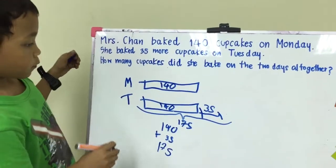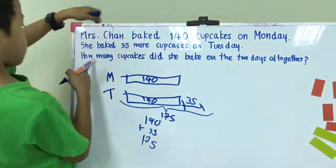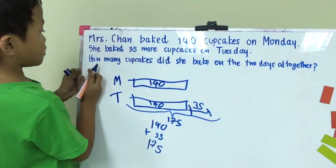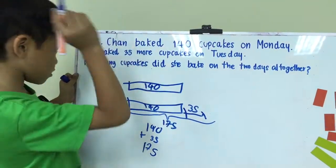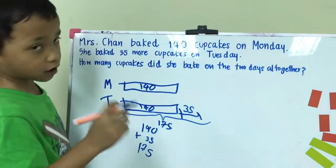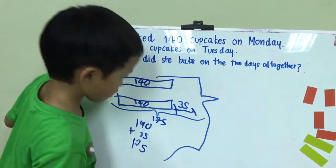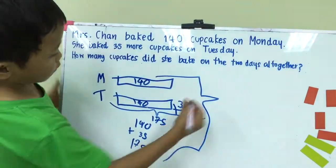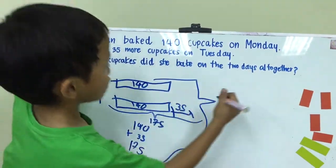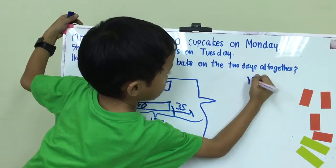Then, we need to know what to do all together because it says how many cupcakes did she bake on the two days all together. Okay, it's 175. We need to add 175.